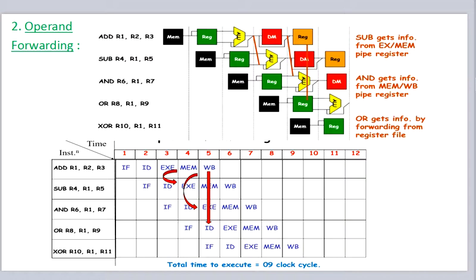The next solution is operand forwarding. In operand forwarding we forward the updated data of r1 from a previous pipeline stage to the current pipeline stage. Since data in each stage is stored in the intermediate latch, we can forward the updated data from there. So we forward the updated value of r1 from the EX/MEM latch of instruction 1 to the ALU of the second instruction, and again we forward the updated value of r1 from the ALU of instruction 3, and again from the register file of instruction 1 to the register file of instruction 4. The advantage of data forwarding is that the number of stalls will be less, hence the total number of clock cycles here will be 9.